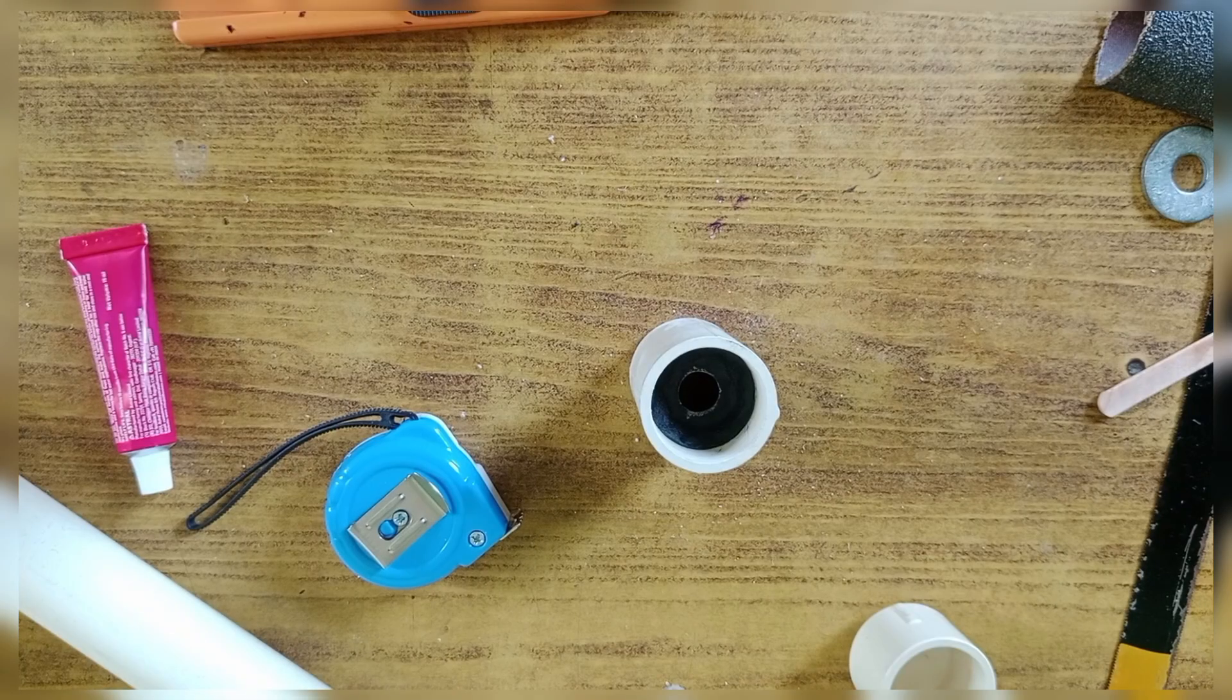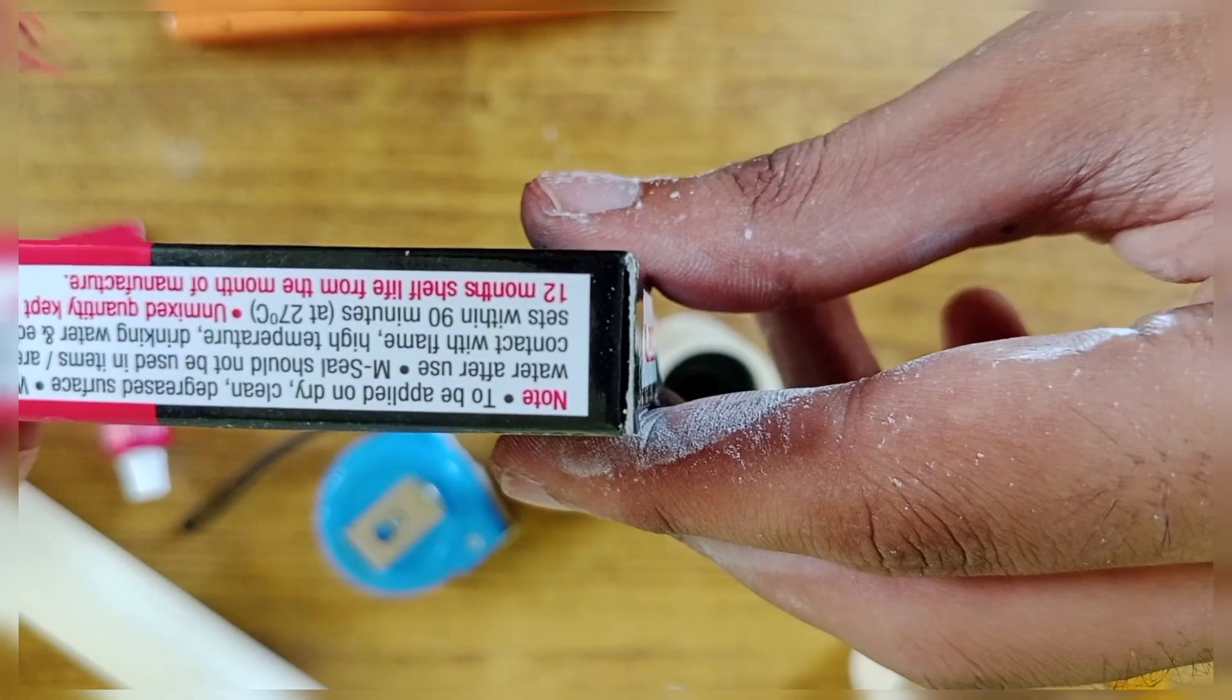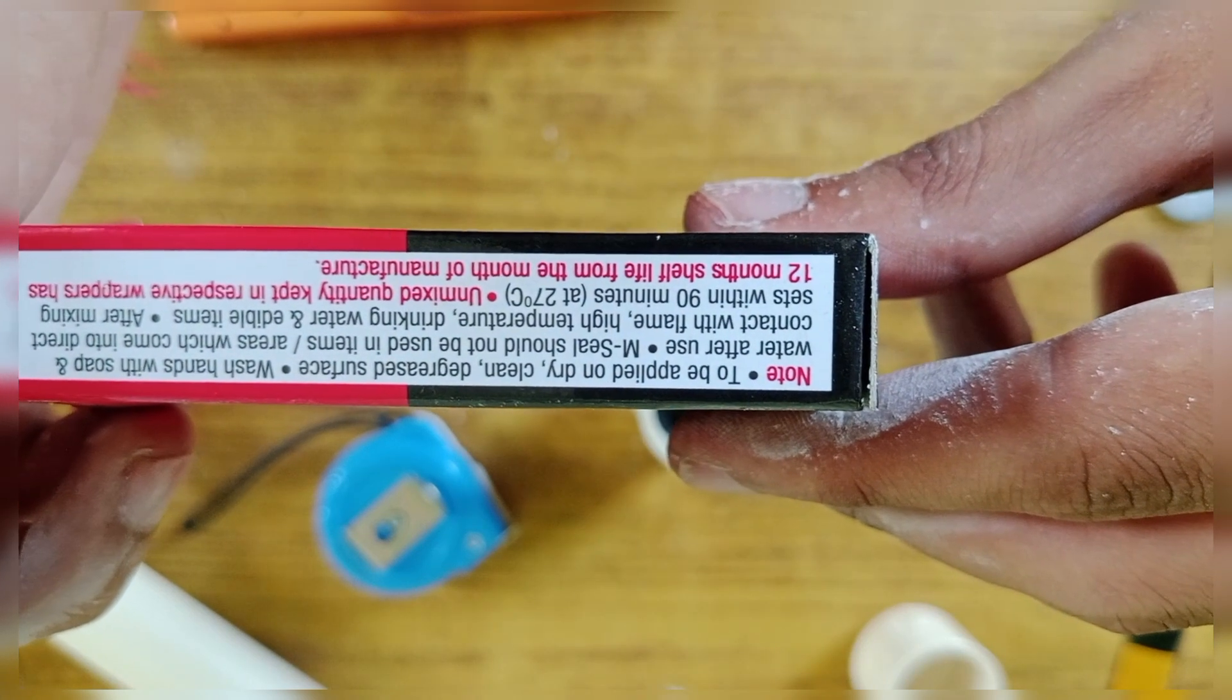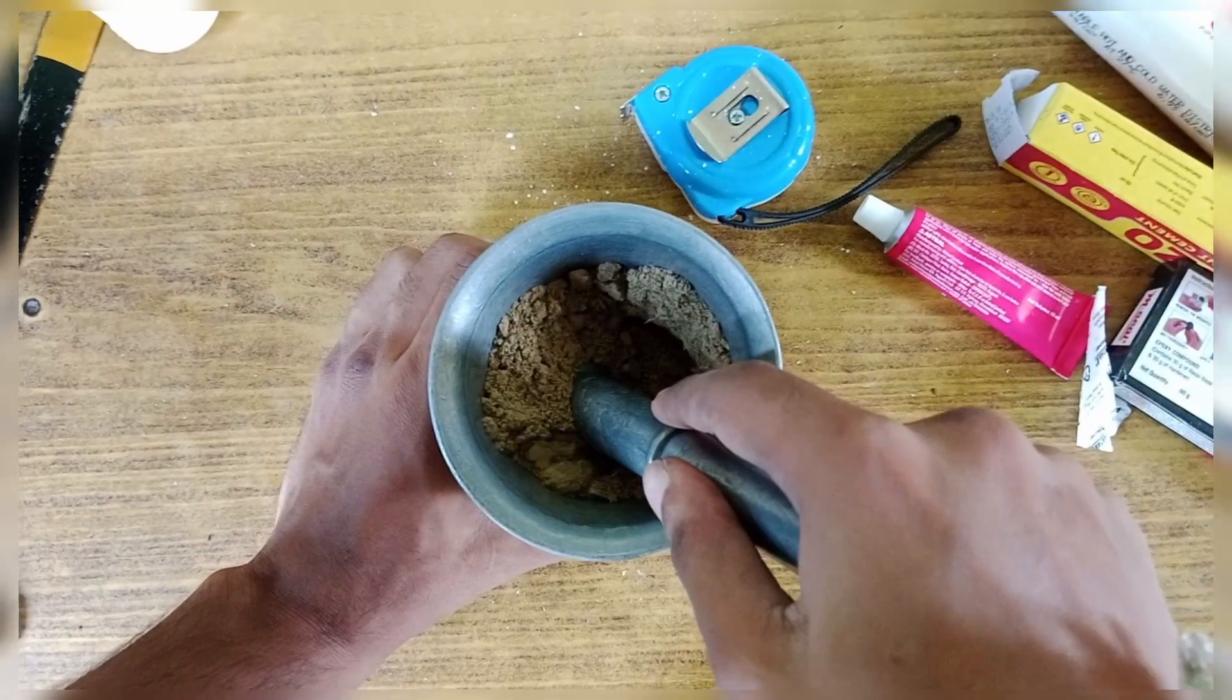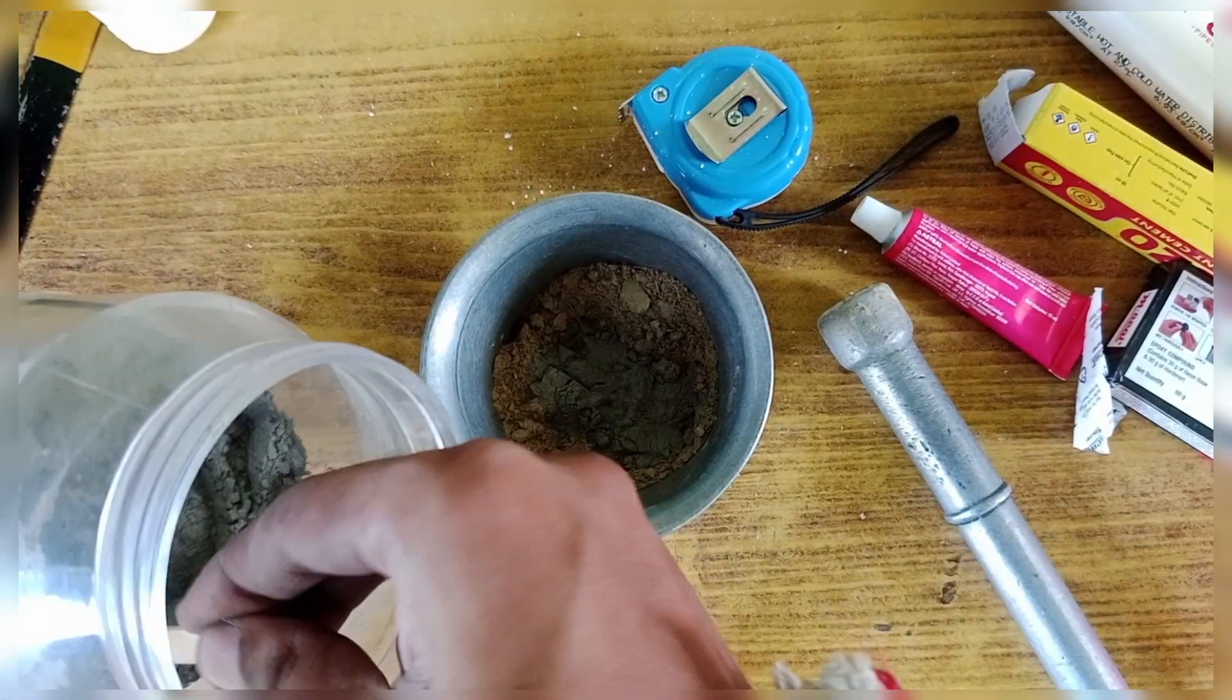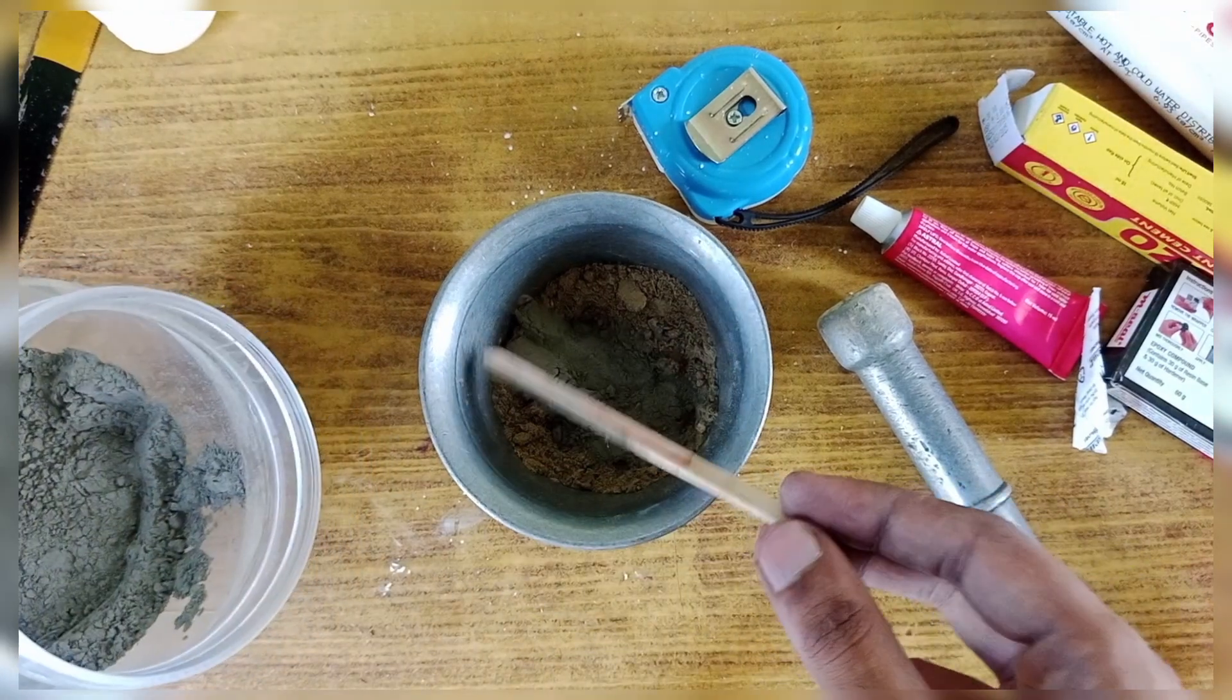I built the entire nozzle using adhesive clay, but this material can't withstand the high temperatures of rocket exhaust gases and could easily deform during firing. To prevent that from happening, I applied a layer of normal clay mixed with cement powder over it. This protective layer helps shield the adhesive clay from heat damage.